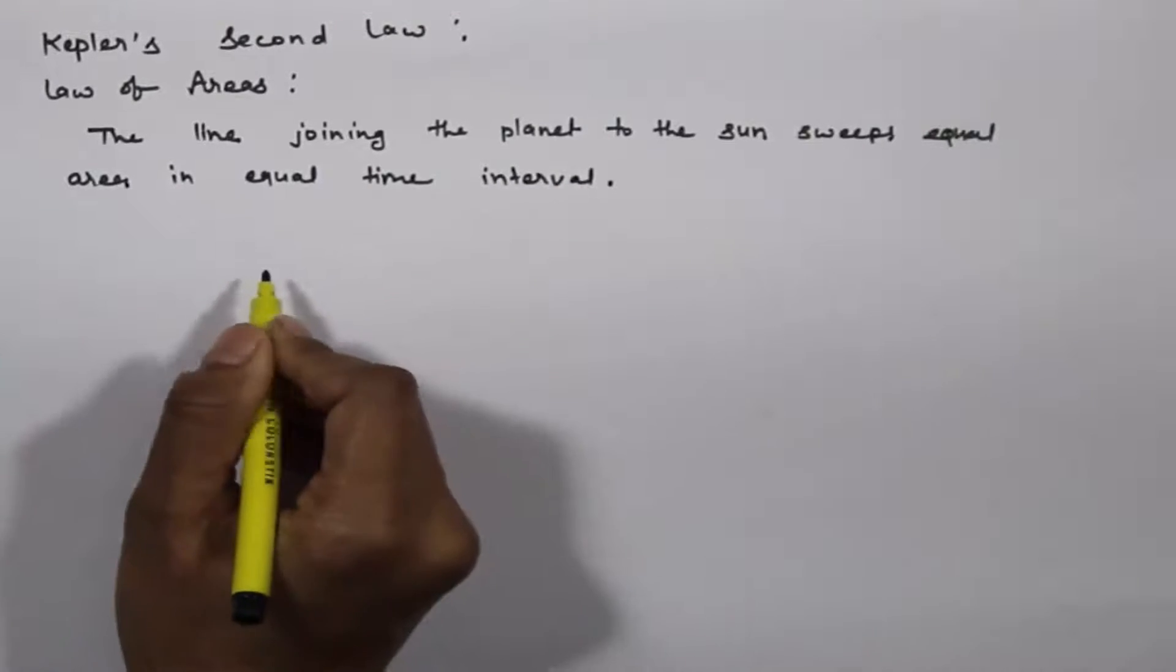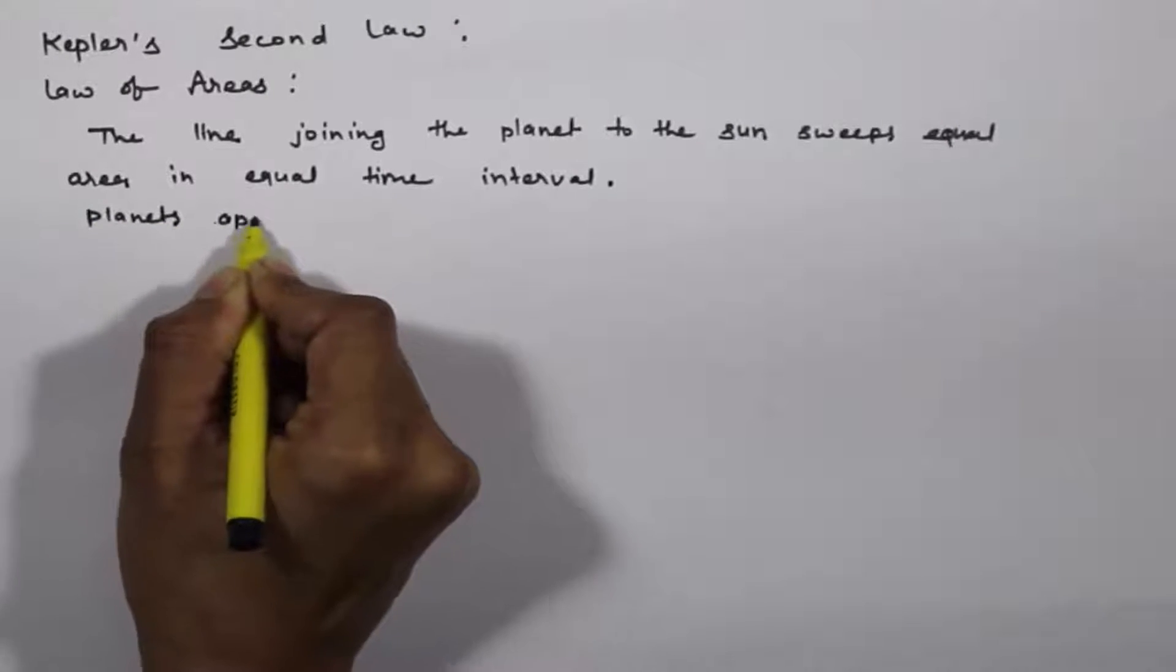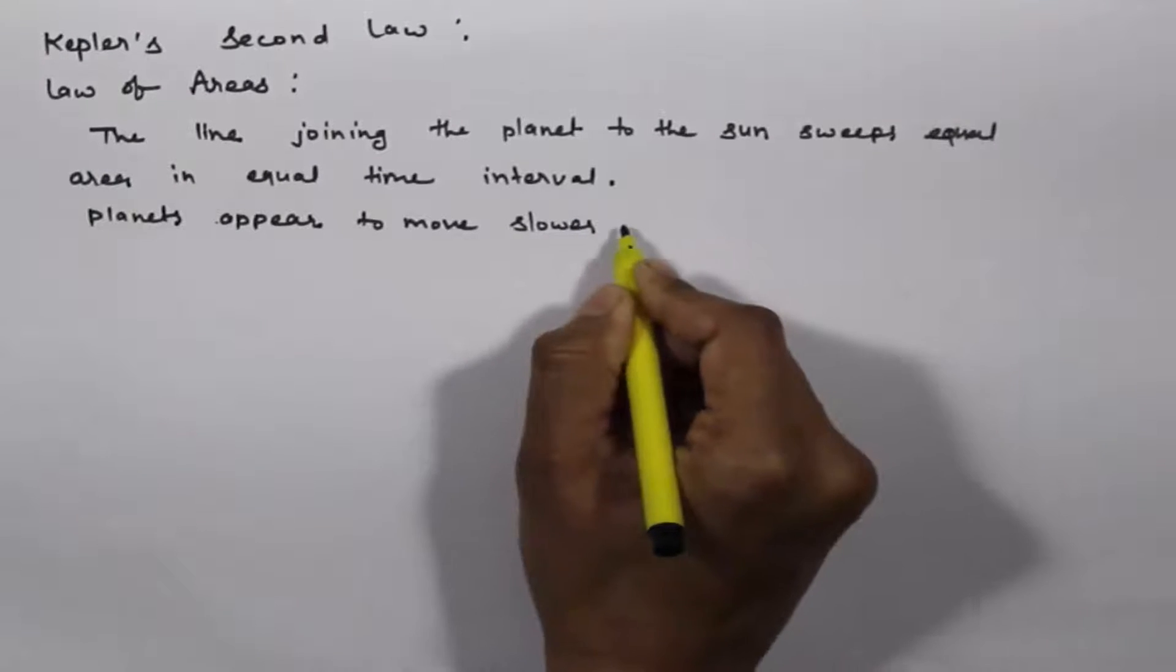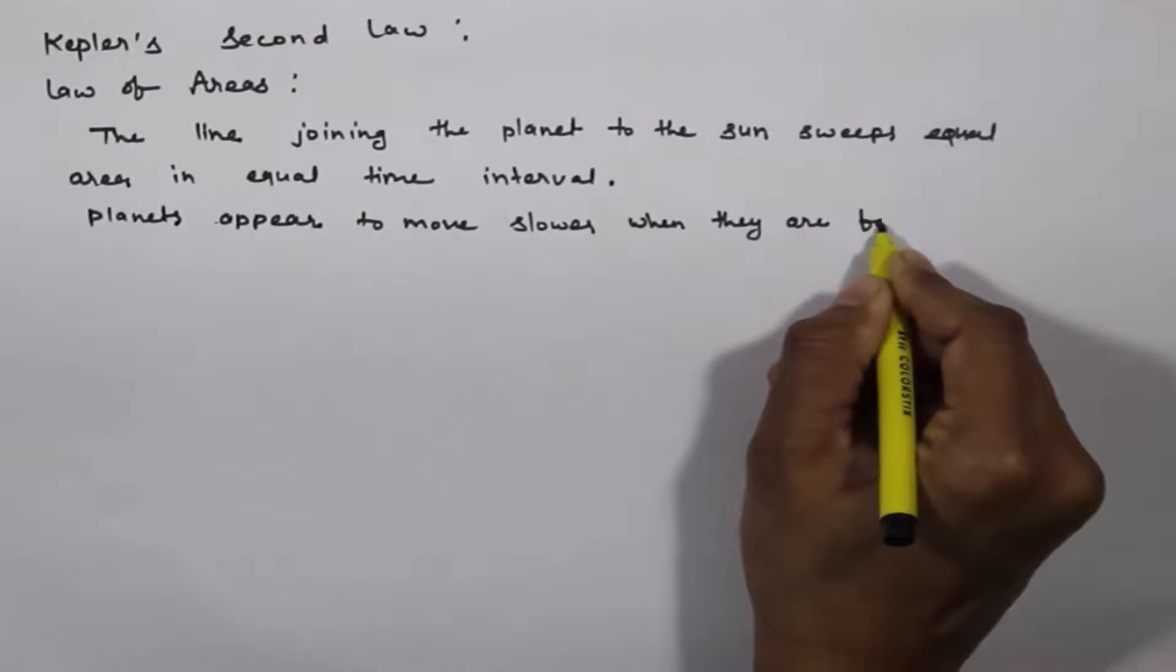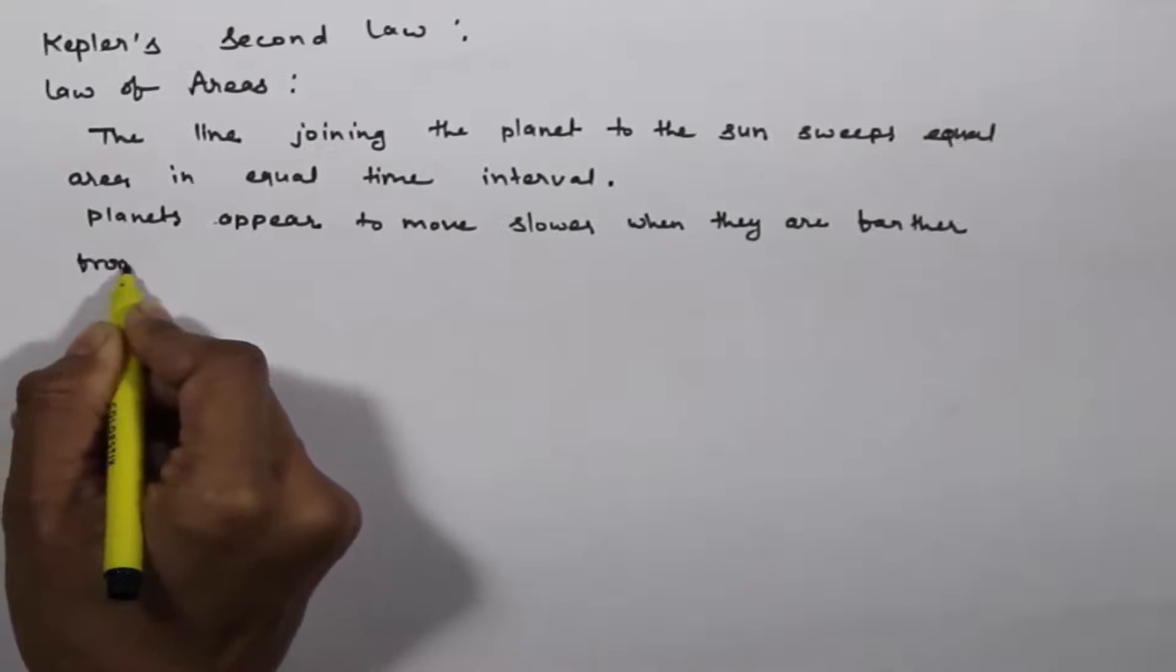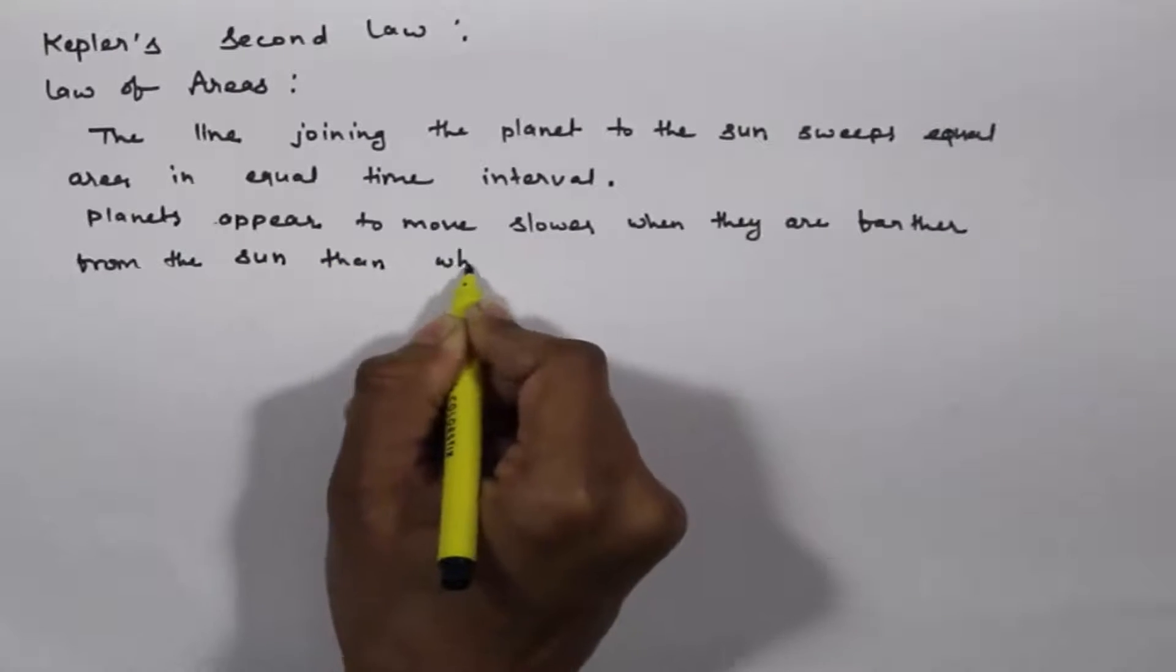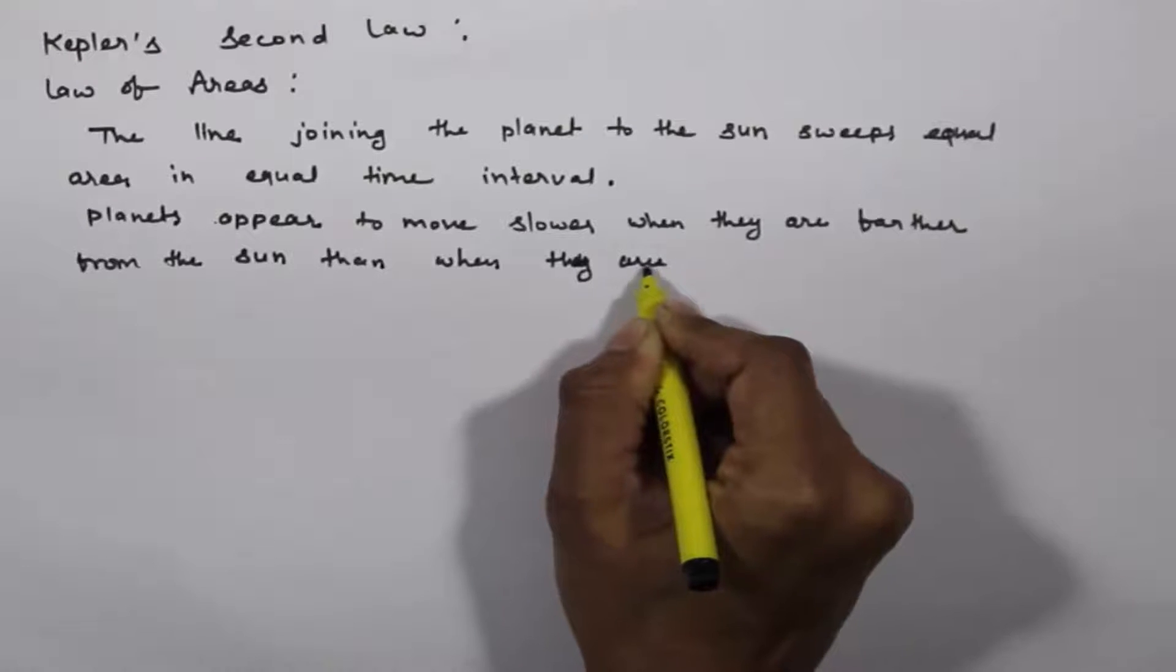This law comes from the observation that planets appear to move slower when they are farther from the sun than when they are nearer.